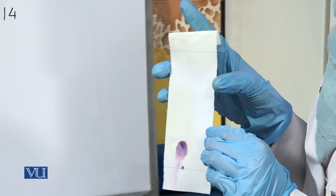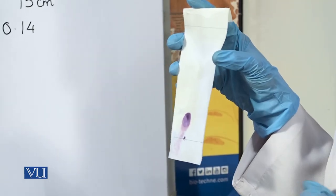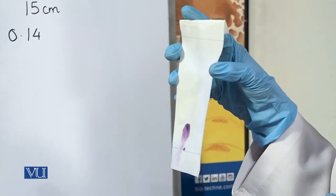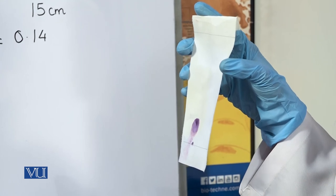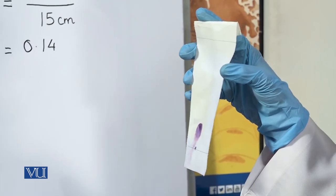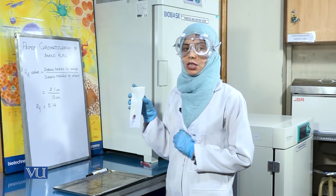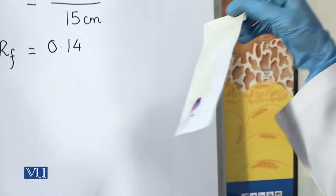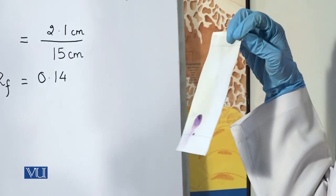Paper chromatography is a valuable tool for the identification of amino acids. Each amino acid has a different RF value based upon the presence of the R group in that amino acid. The RF values can be used to identify the amino acid present in the solution. This indicates that our sample contains the amino acid lysine.